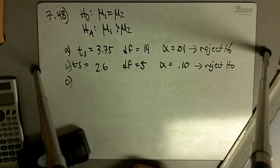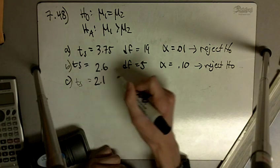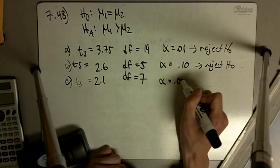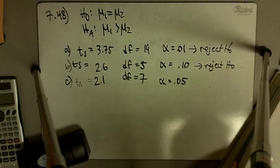Part C says our t-statistic is 2.1, degrees of freedom is 7, and our alpha level is 5%. So at 7 degrees of freedom,